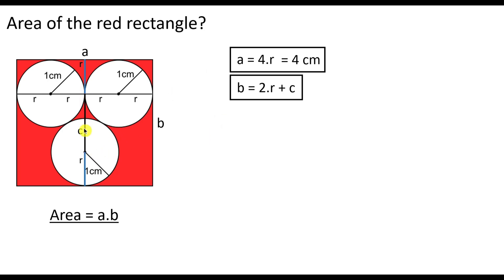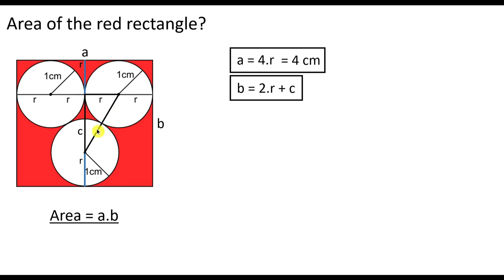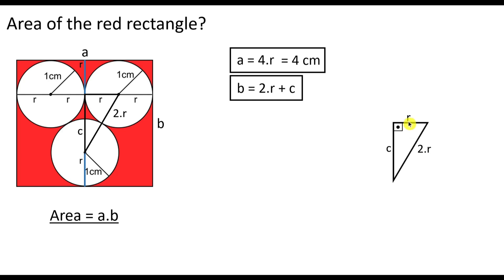Now we need to find C. We can see that here we have a right triangle where one side is equal to the radius, which is one, this side is equal to C, and the hypotenuse is equal to two times the radius, which is two. So let's detach this triangle — it has hypotenuse 2R and sides R and C. We can now use the Pythagorean theorem to find C.